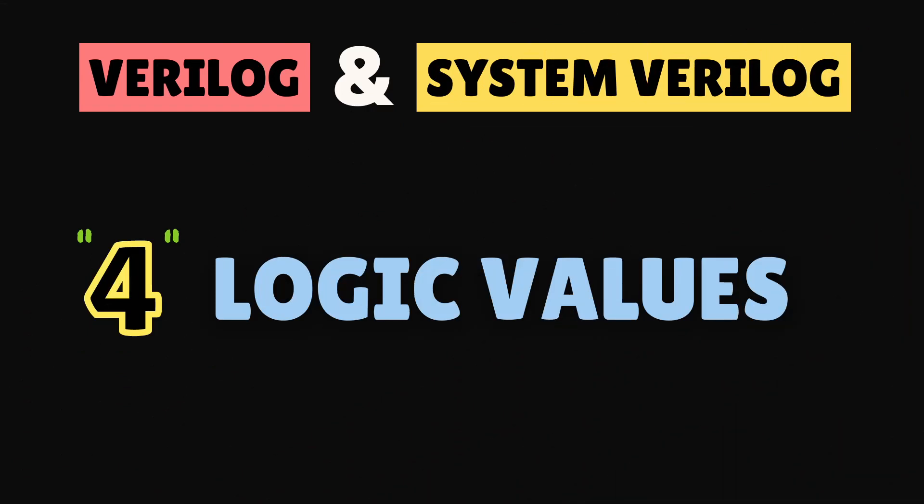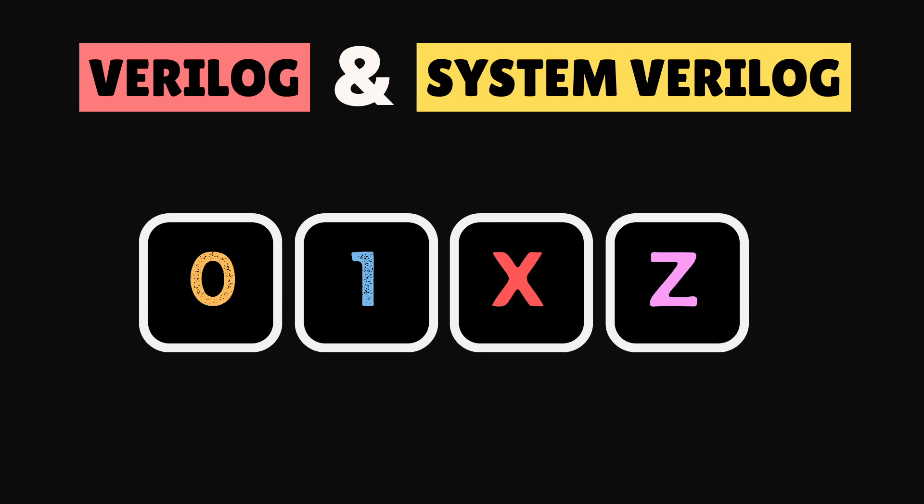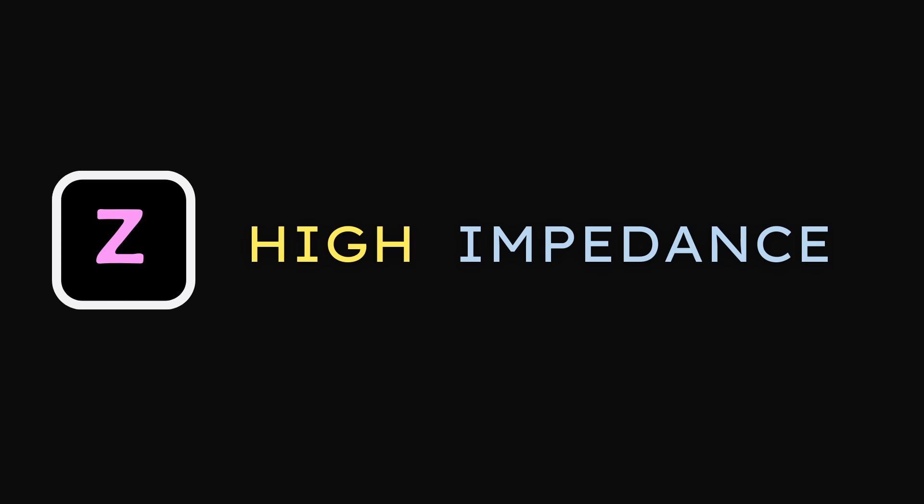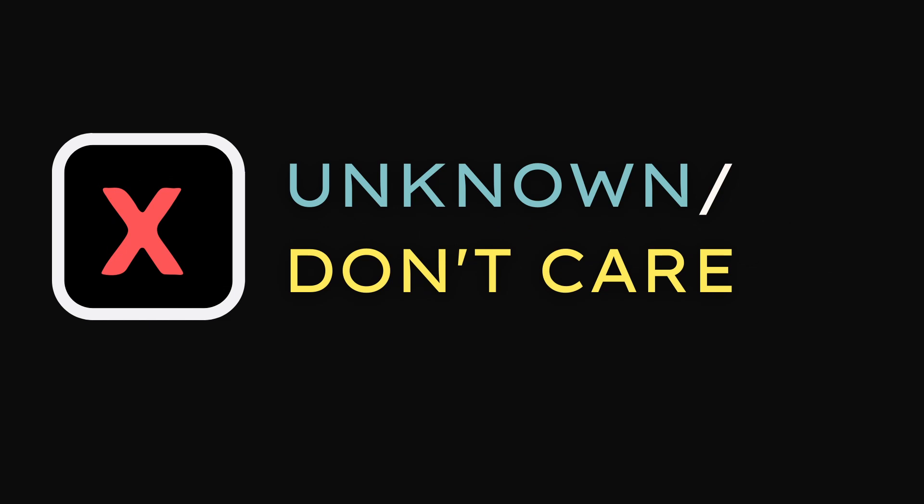We know that SystemVerilog and Verilog defines four different logic values for modeling hardware: 0, 1, X and Z. 0 and 1 are real logic values that exist in actual silicon. Z represents a high impedance state, an undriven or a tri-stated signal, while X represents an unknown or indeterminate logic.